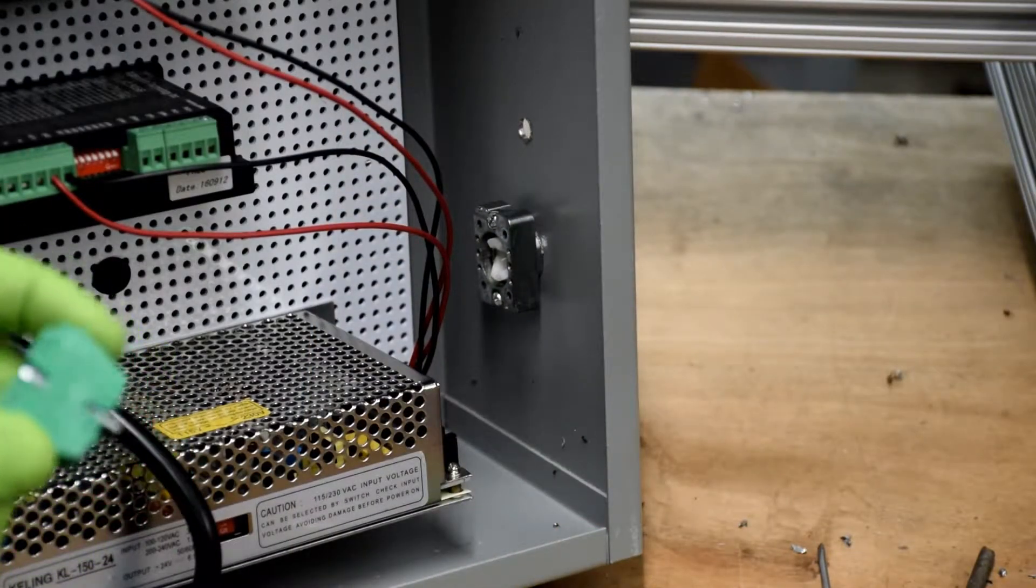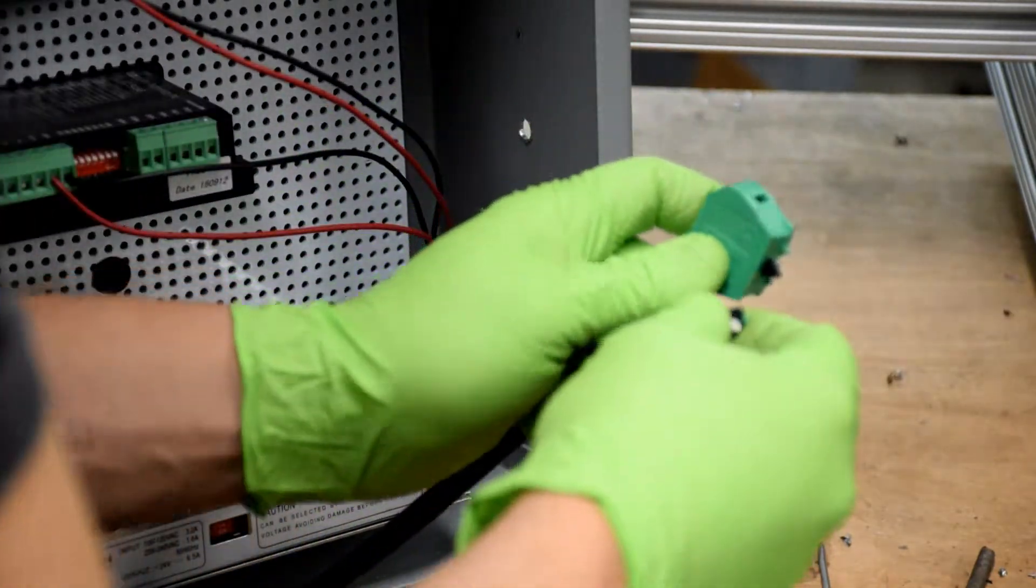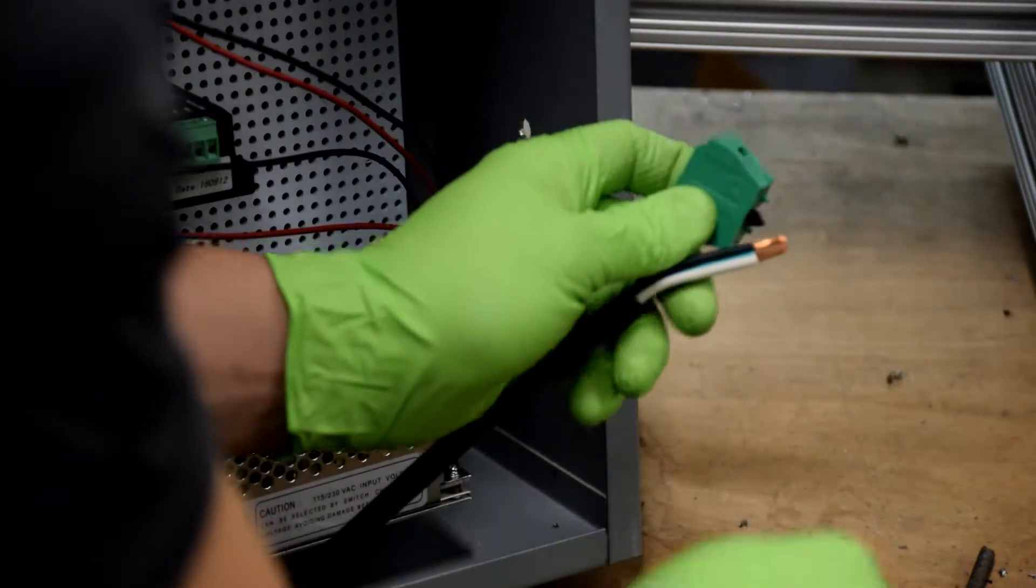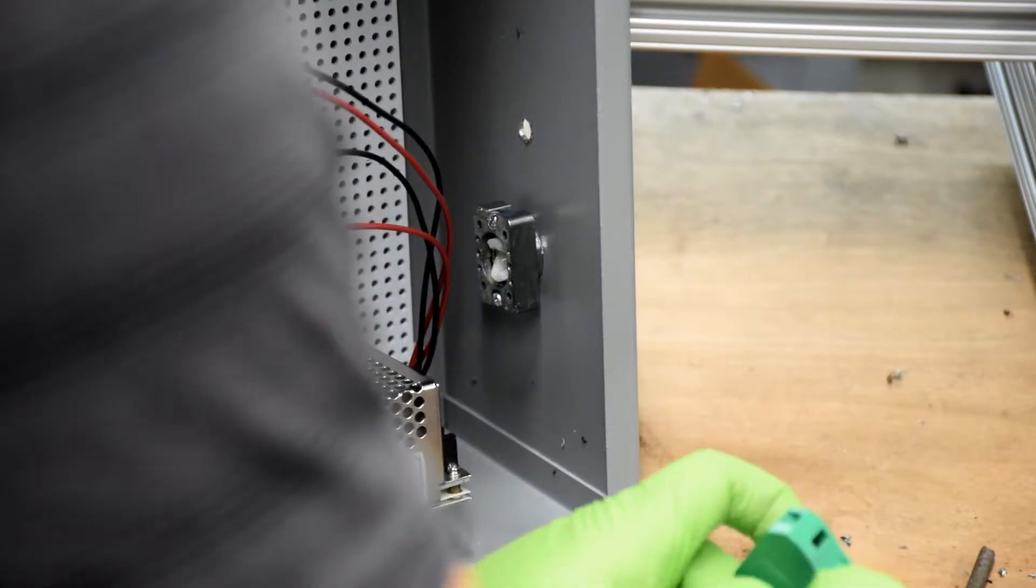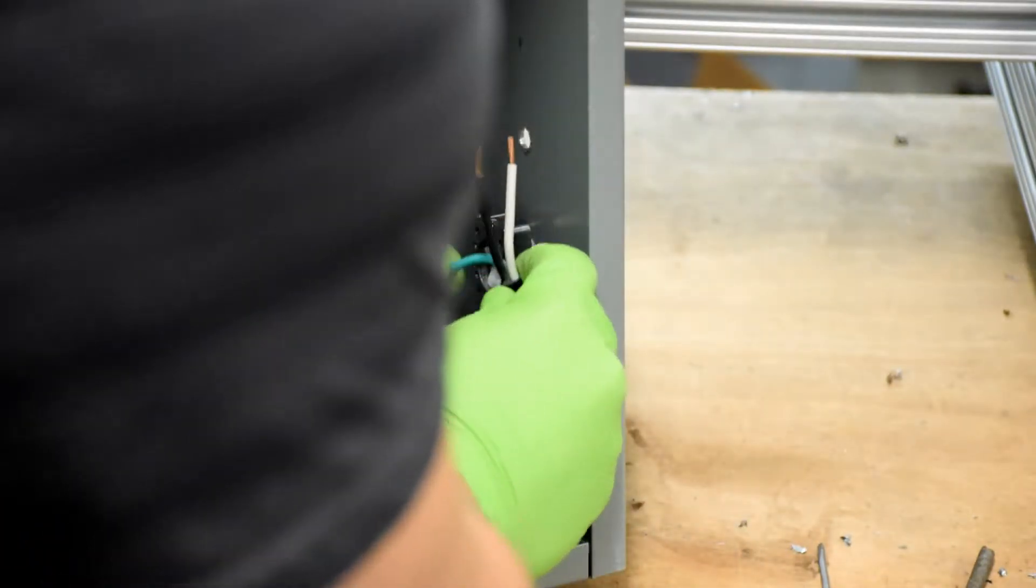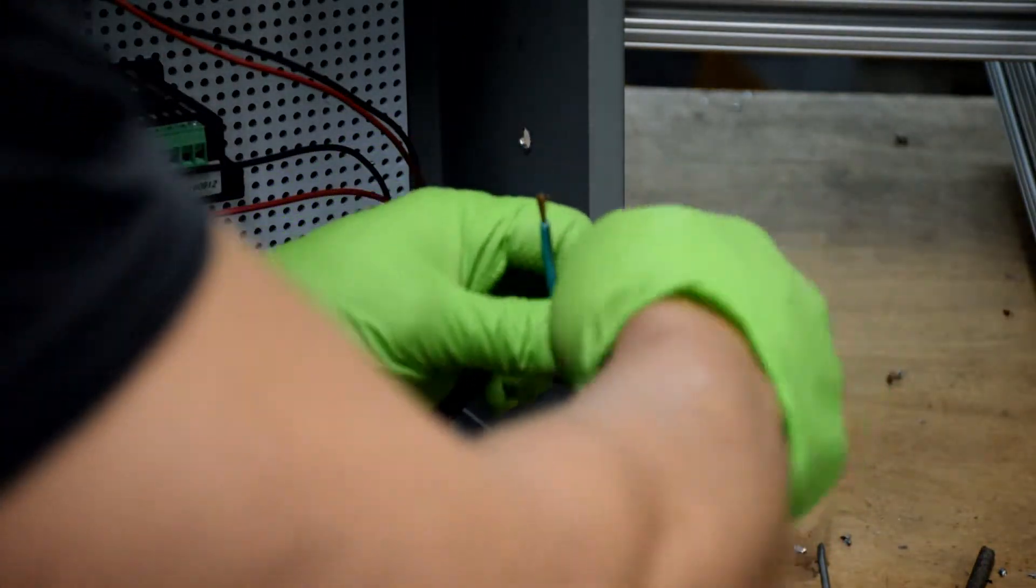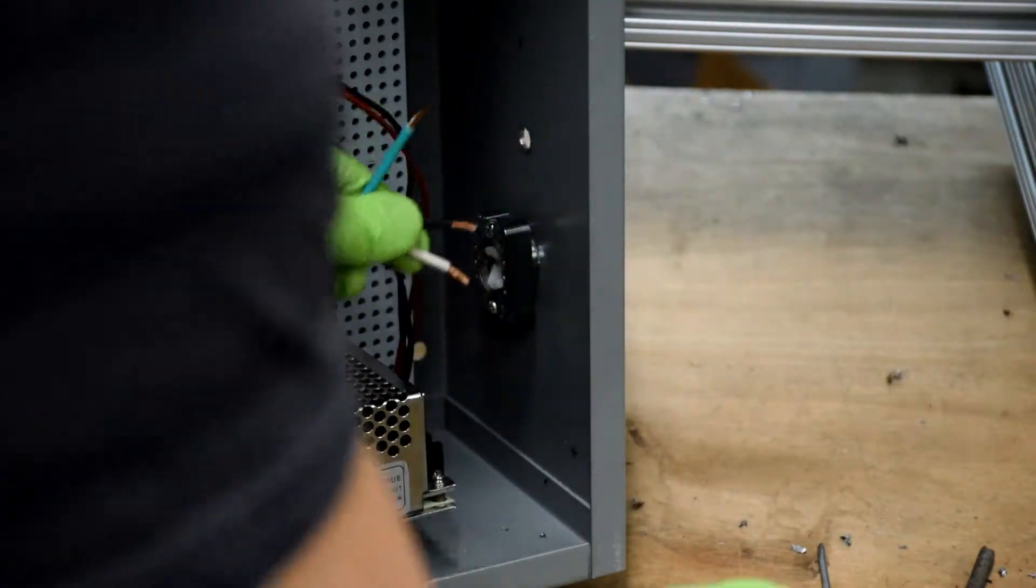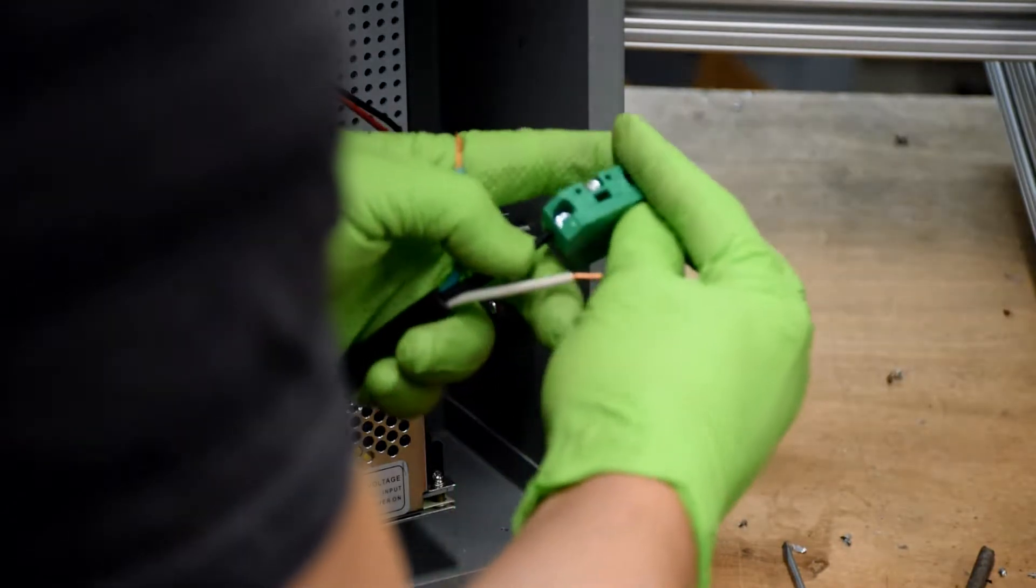Now that the switch is mounted, we can wire up the terminal blocks and install them into the switch. Remove the ends from your power cord and give those wires a little twist. And I'm just making sure here that my wires are going to reach everywhere they need to reach and just doing a little fitting here.